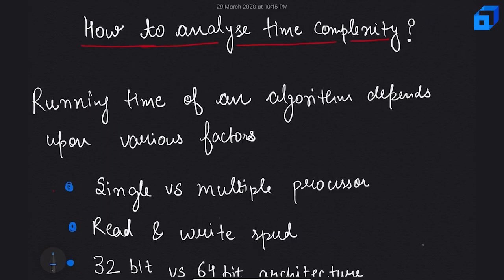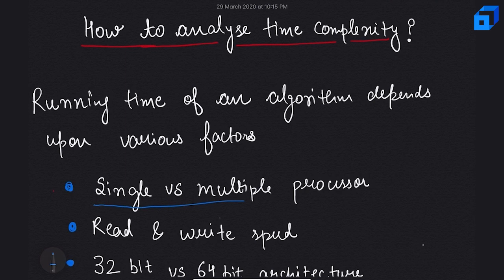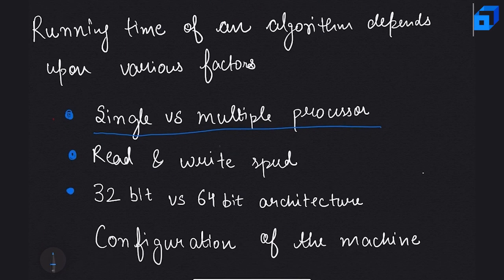In this lecture we'll discuss the running time of an algorithm. The running time of an algorithm depends upon several factors. It depends upon whether our program is using a single processor or multiple processors for execution, because if our program is using a single processor then we cannot execute our program in parallel.